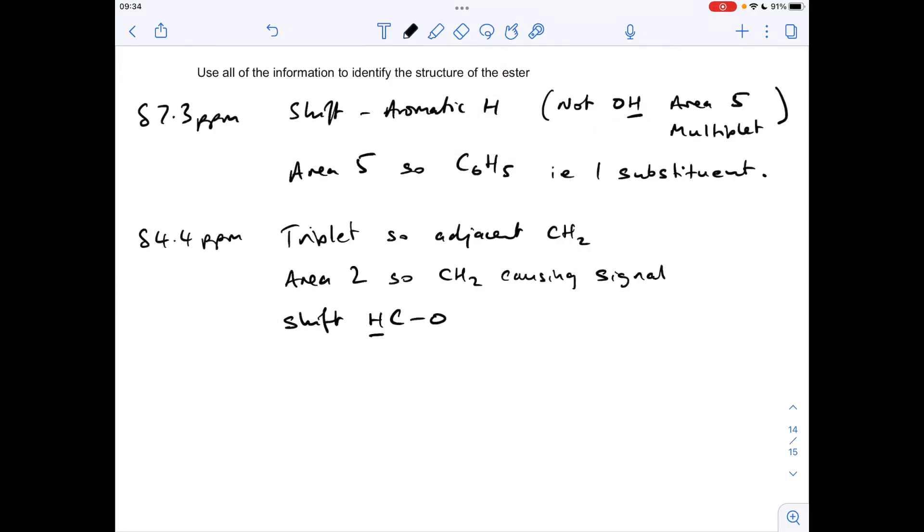OK, so now we've got that, we can draw up this little part of the ester now, so we know that we've got two hydrogens, obviously on a carbon, bonded to that oxygen, so that's likely to be the ester group. And adjacent to these, we've got a CH2 group. So obviously that's caused that signal at 4.4, and these two protons here have caused the splitting pattern of the triplet.